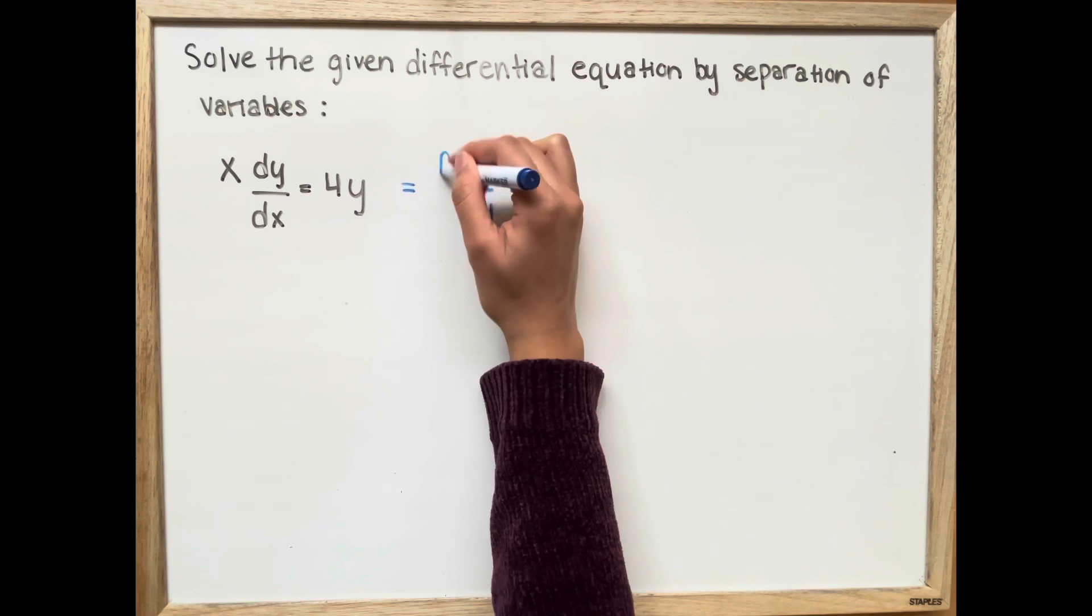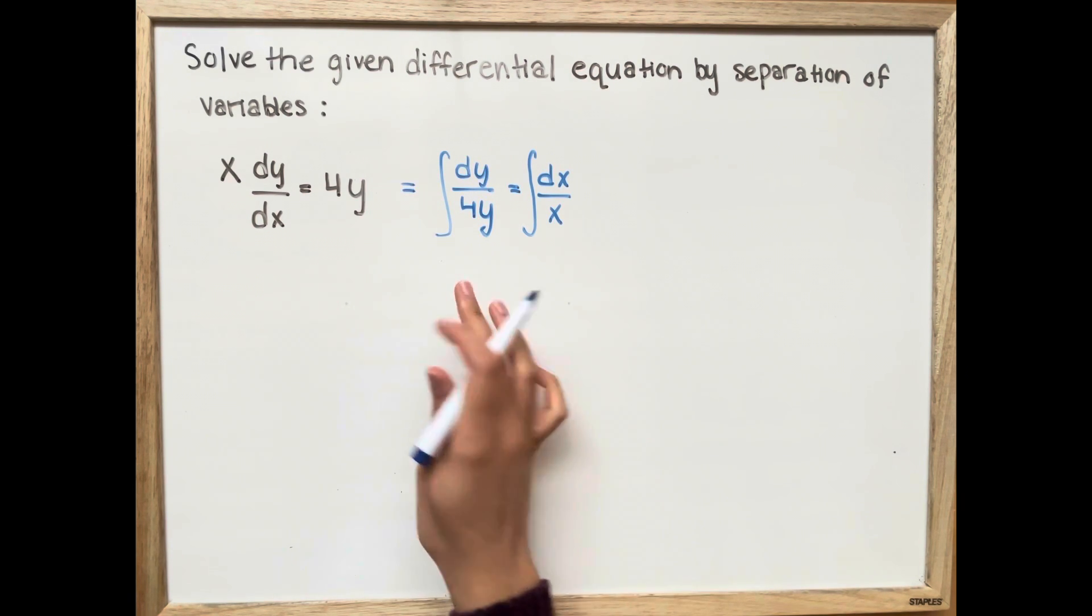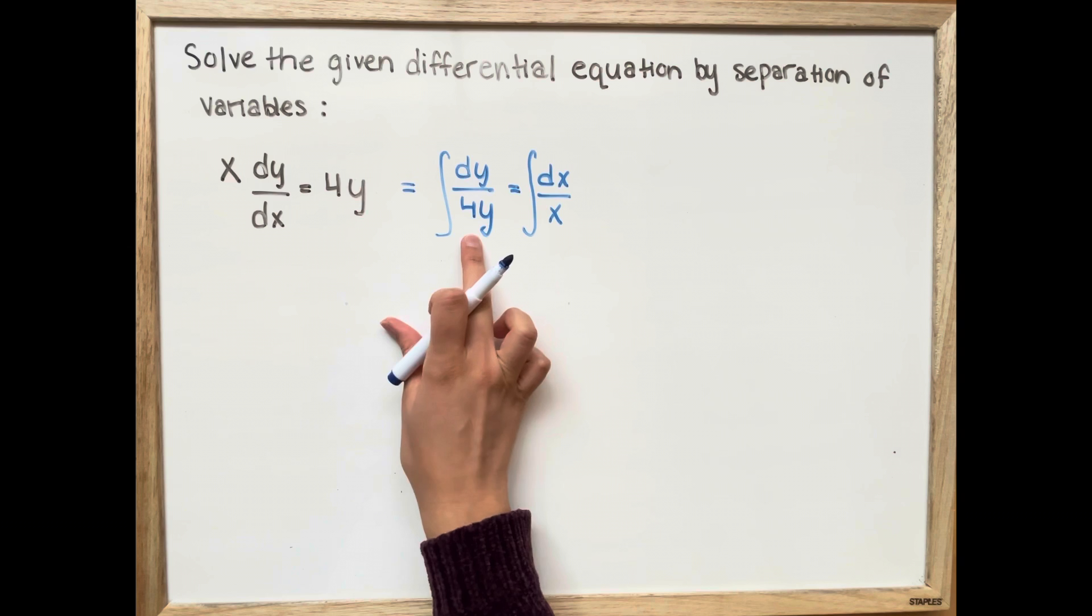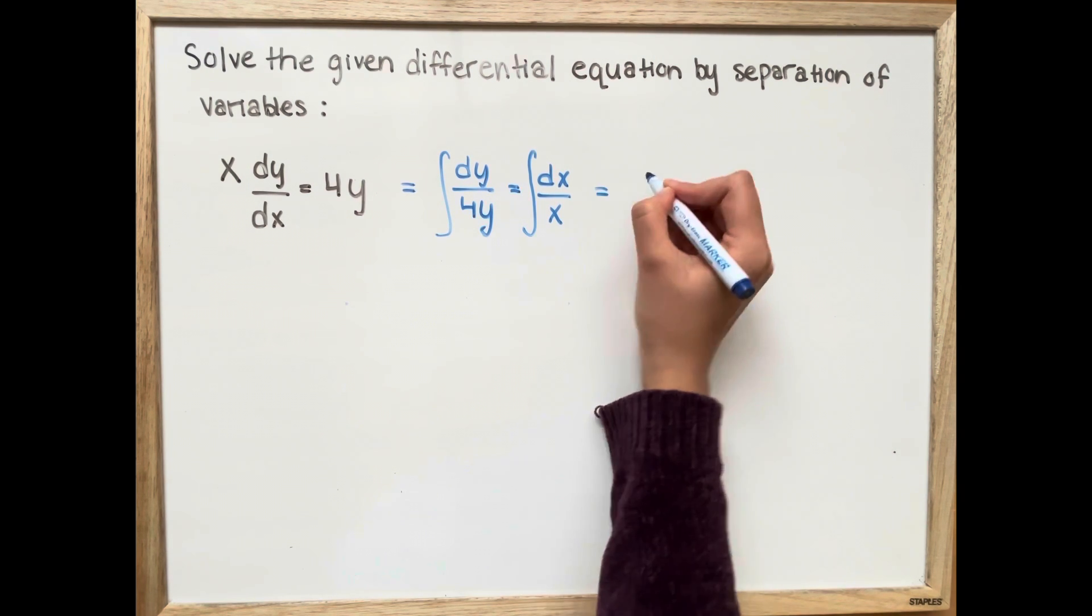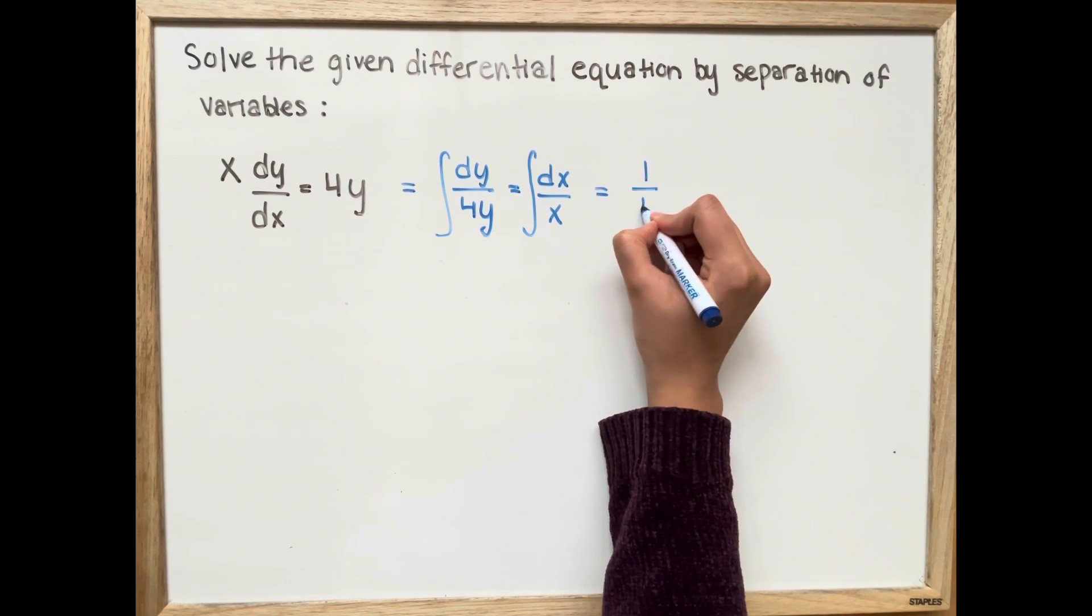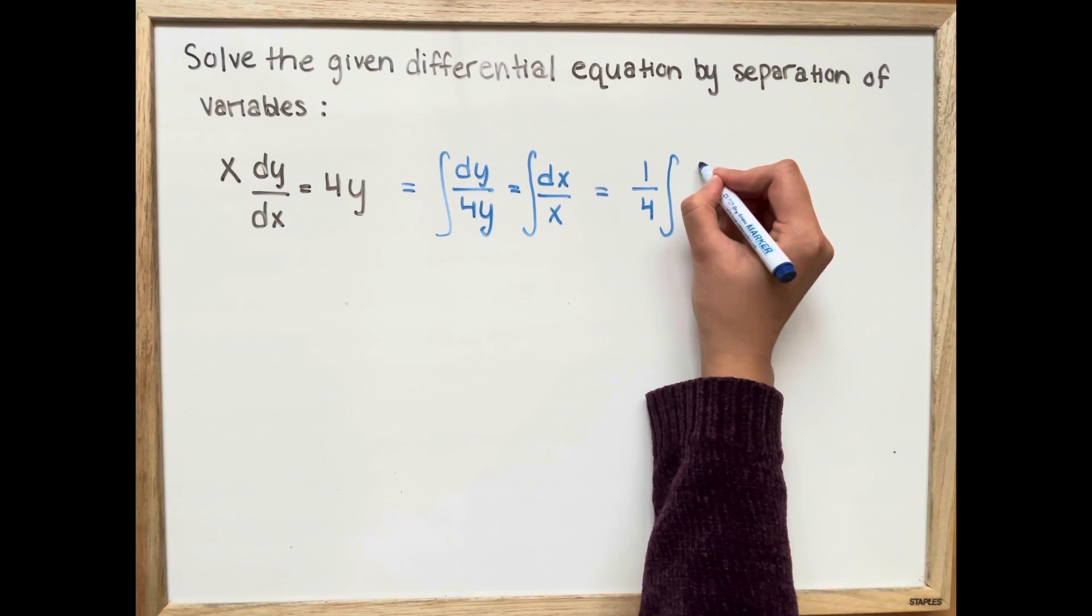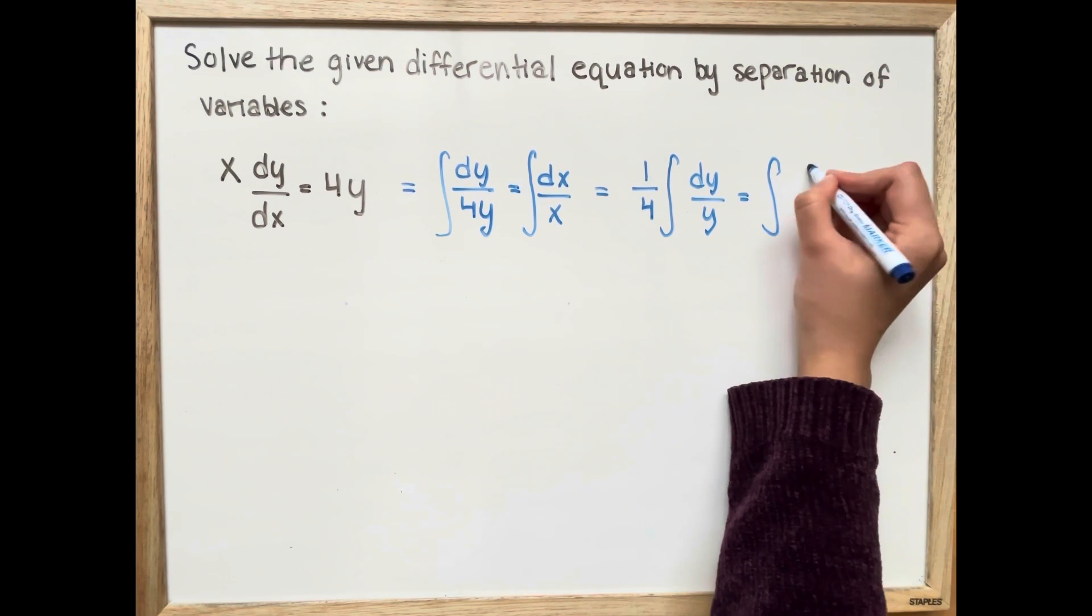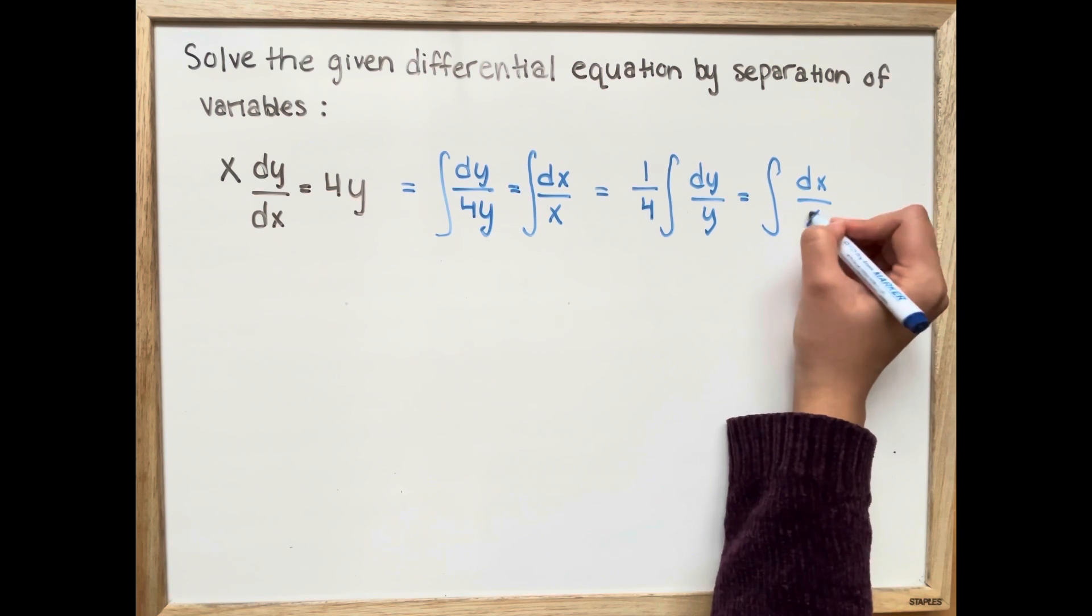Now we're going to take the integral of both sides and we're going to take the constant 4 out because the integral does not affect the constant. So it's going to be 1 over 4 integral of dy over y, which is equal to the integral of dx over x.